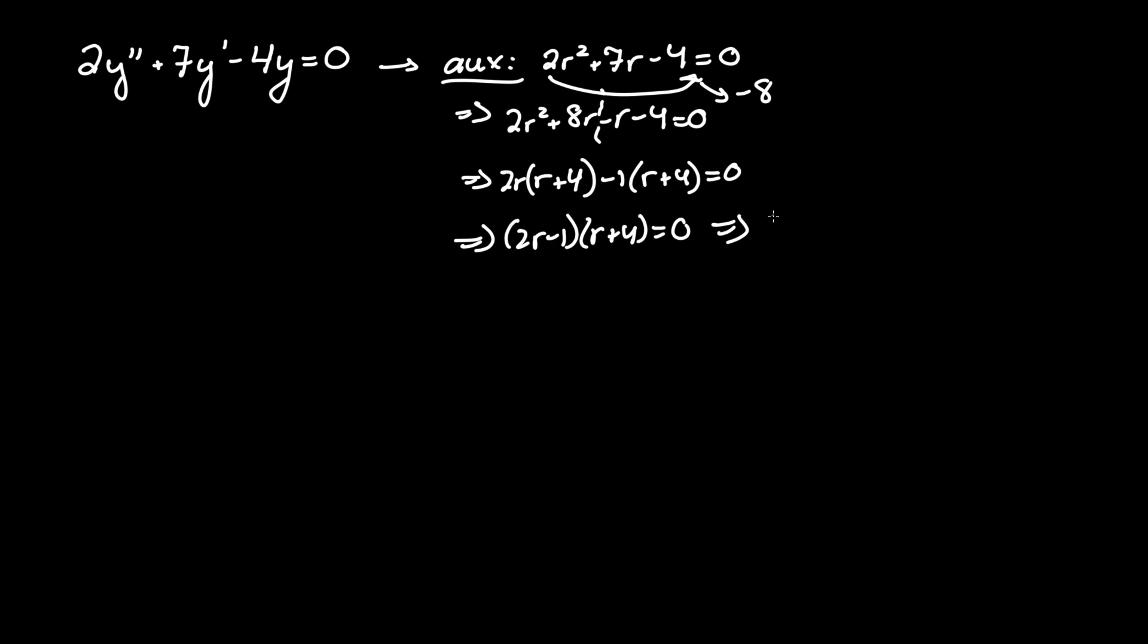Therefore, these are two solutions. So, rewriting that, 2r minus 1 equals 0, or r plus 4 equals 0. So, 2r equals 1, divide by 2. r1, our first solution, is 1 half. And this one's a little easier. We can just say r equals negative 4, r2 in this case.